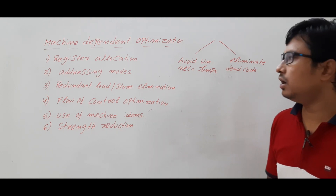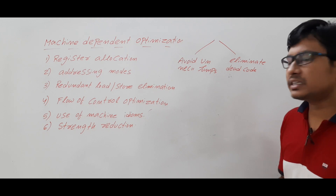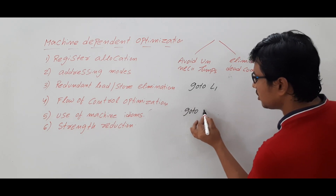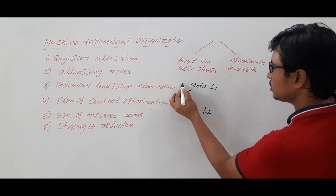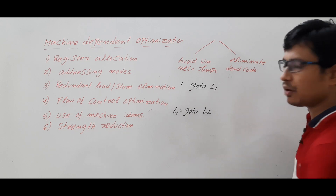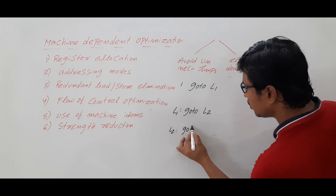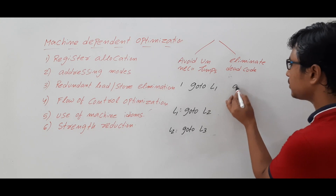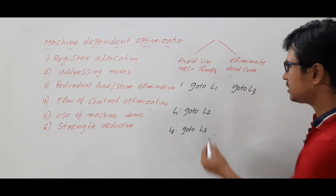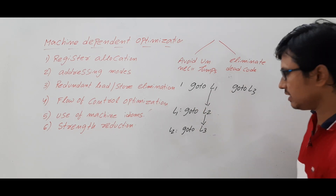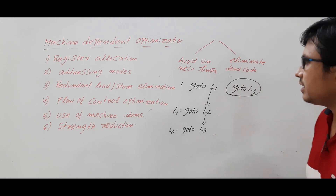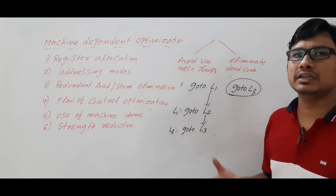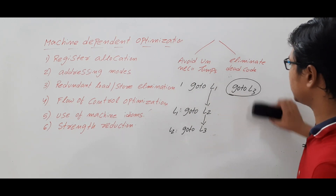For avoiding unnecessary jumps: suppose you have 'goto L1', and at label L1 there is only 'goto L2', and at label L2 there is only 'goto L3'. Instead of jumping from L1 to L2 and then to L3, you can directly write 'goto L3' at the original point. Again, the machine must have the intelligence to identify this chain of jumps in order to optimize it.